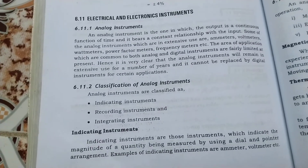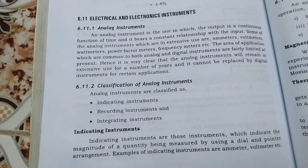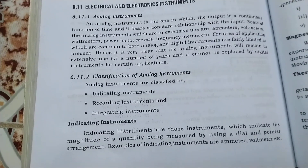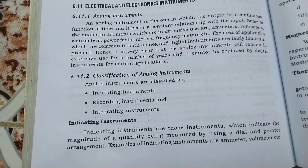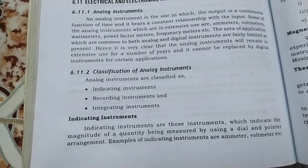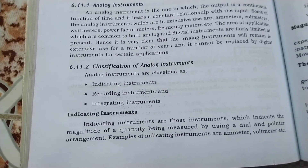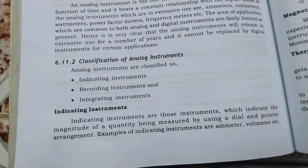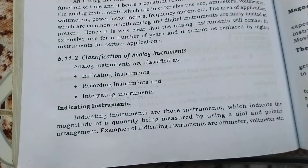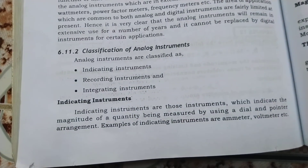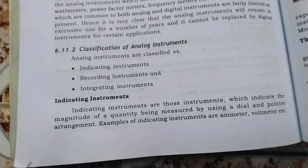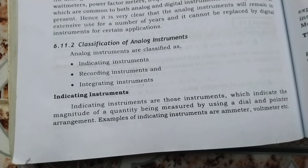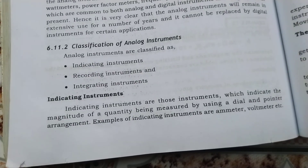The fifth unit is measurement instruments. Instruments are classified as indicating, recording, and integrating. Indicating instruments just indicate the reading. Recording instruments just record the reading. Integrating instruments indicate as well as record.